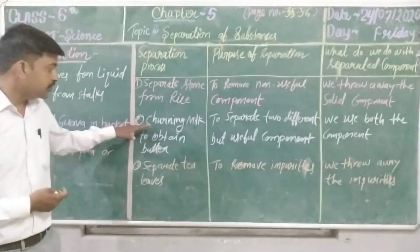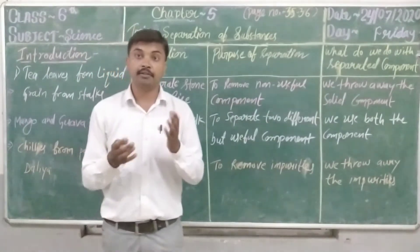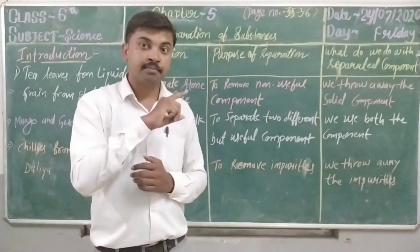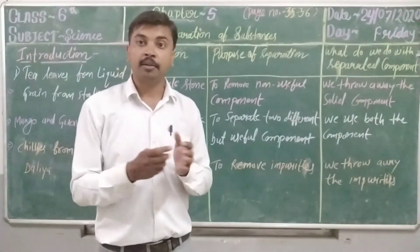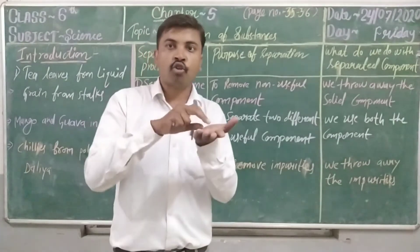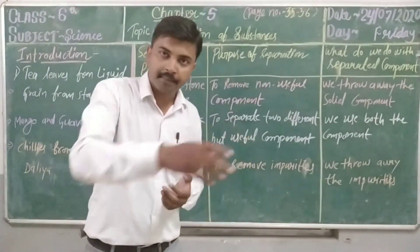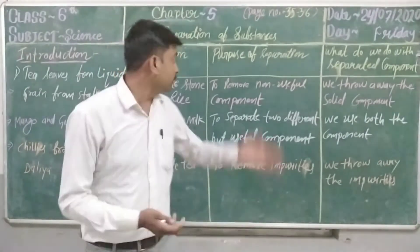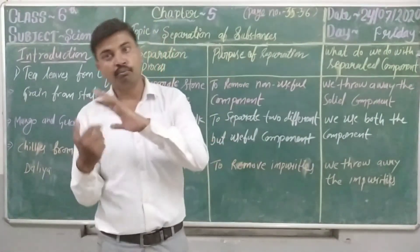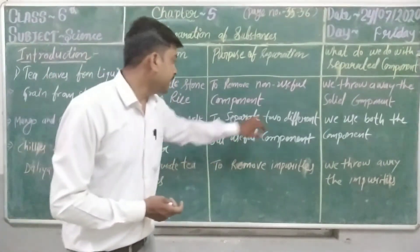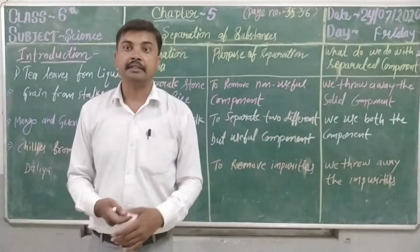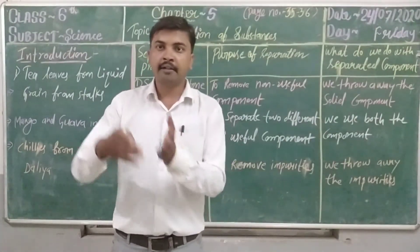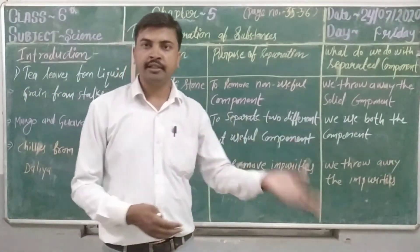The second is: churning milk to obtain butter. By the process of churning, on the basis of density, butter comes to the top layer. So we separate the butter from the milk. The purpose of this separation is to separate two different but both useful components. We use butter in one way, and the remaining part of the milk we also use in another way.